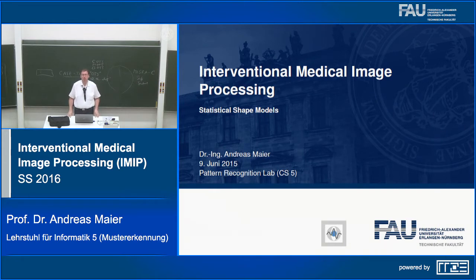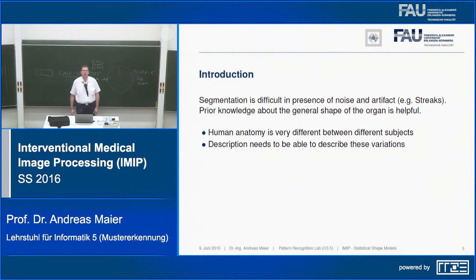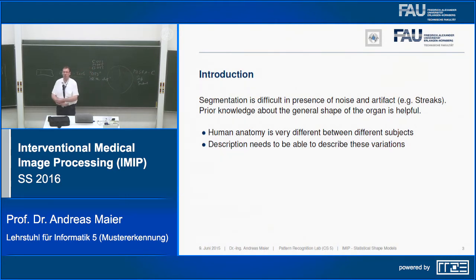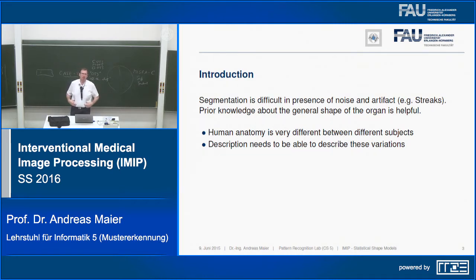In an extreme case — say you're in material testing and imaging a part of known dimensions — you could use a CAD model to drive the segmentation. However, we can't do that in the general case with humans, because the organs we're interested in vary. A single shape describing how a liver looks would not be a good model for all humans, since liver shape varies between individuals and can even change based on how you lie on the table.